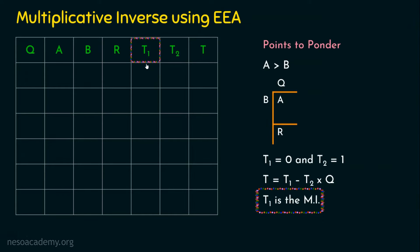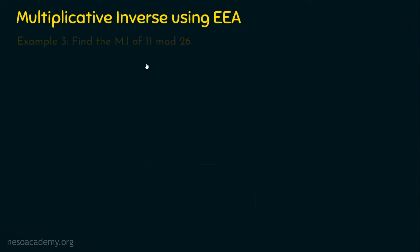Let's see example number three. The question is: find the multiplicative inverse of 11 mod 26. There are two numbers given: 11 and 26. We want to find the multiplicative inverse of 11, meaning 11 multiplied by its inverse, when divided by 26, should give a remainder of 1. That's what we are going to find.